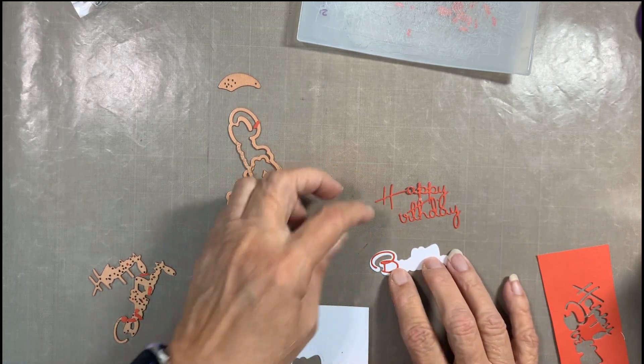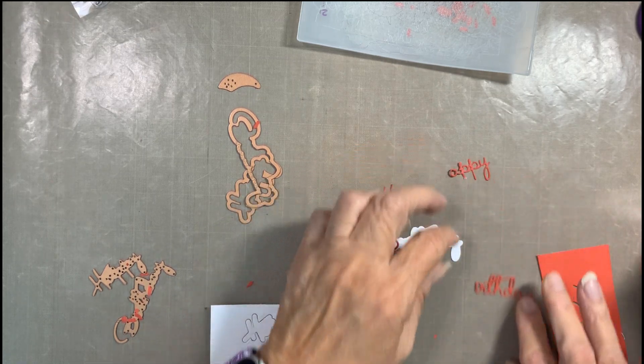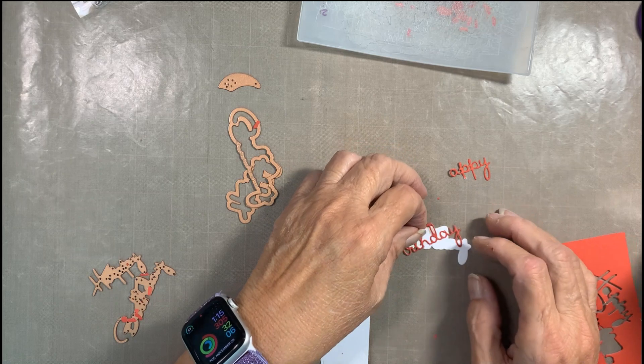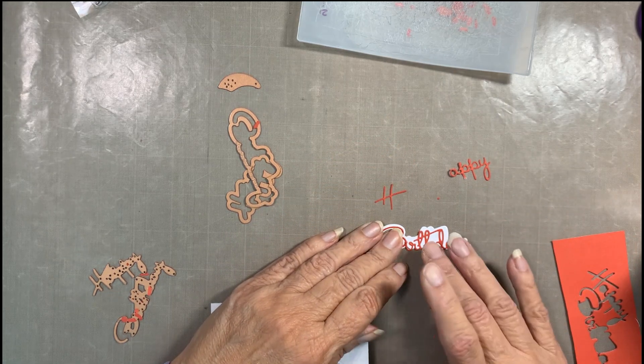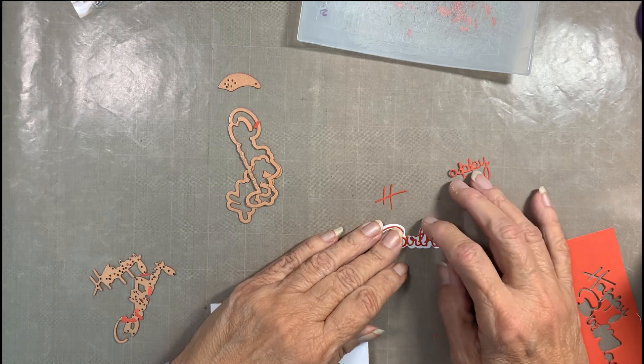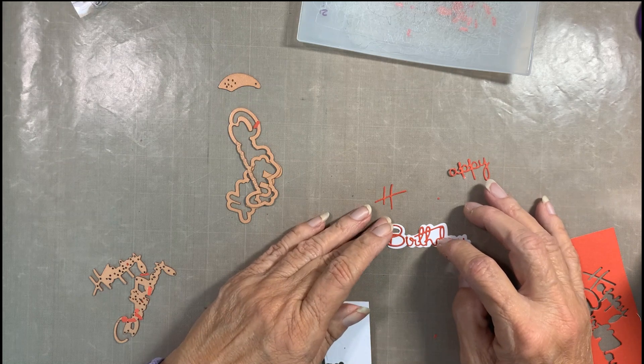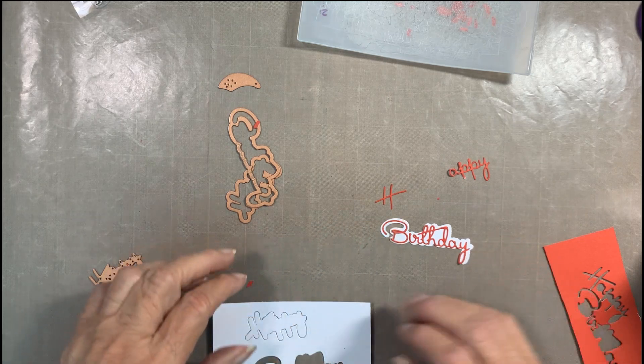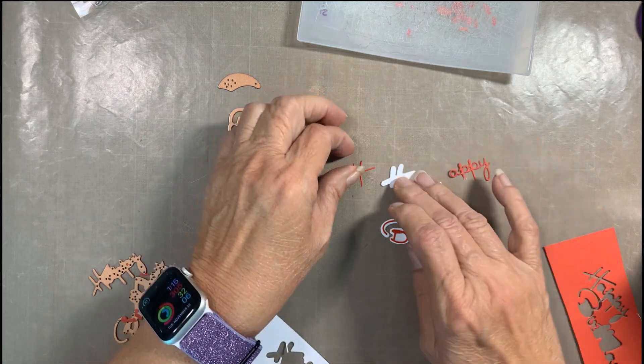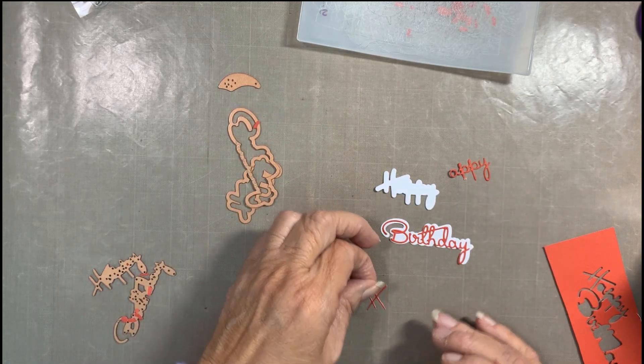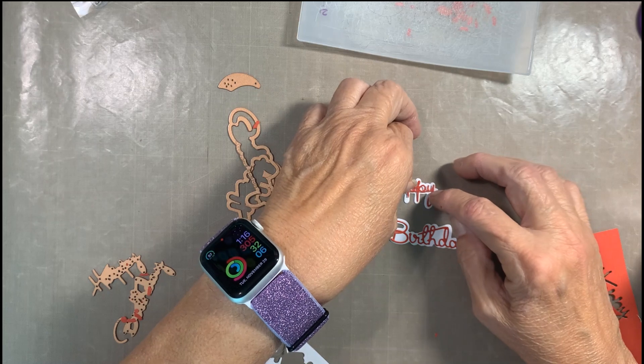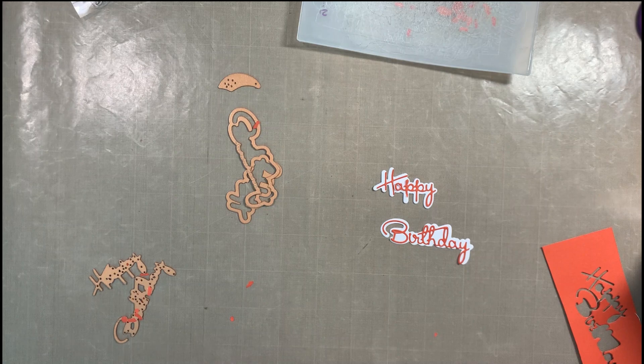All right. Oh, I love, love the way that is right there with that B. That is adorable. Oh my gosh, that's too cute. Hold on. Let me get it centered. Close. Here's the H.